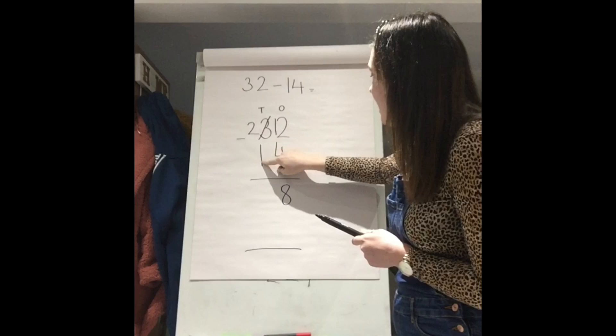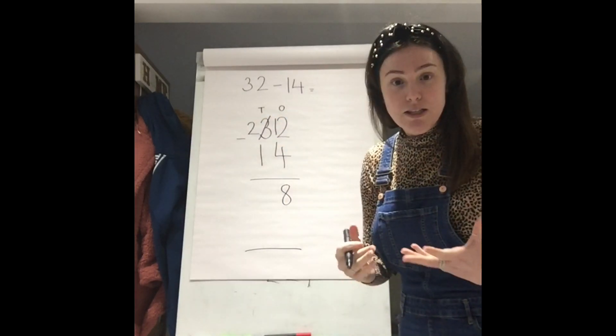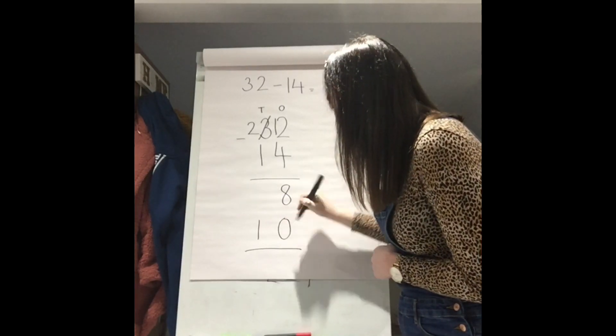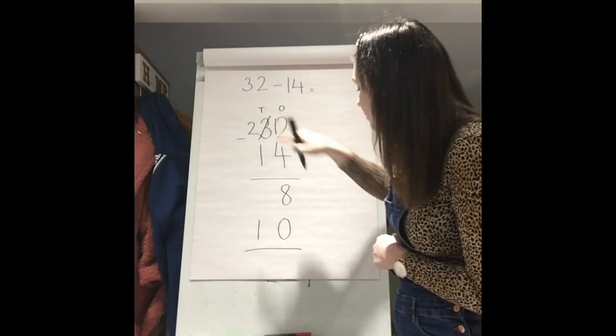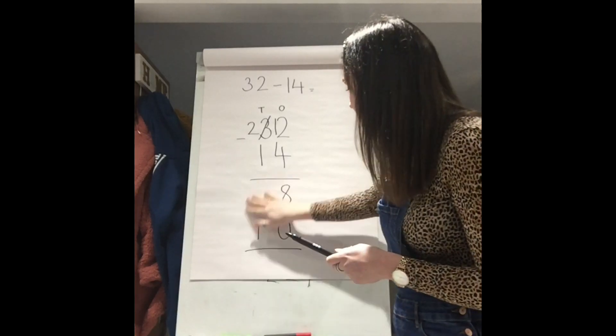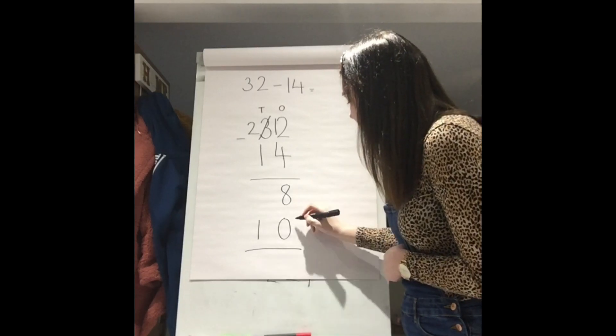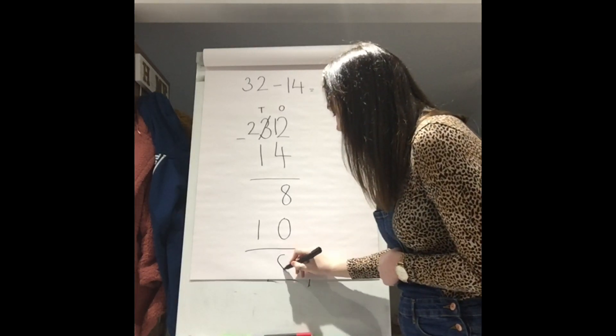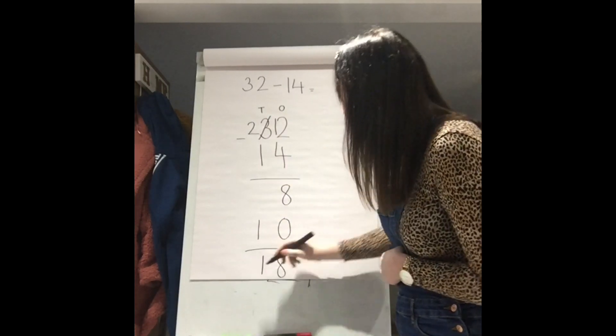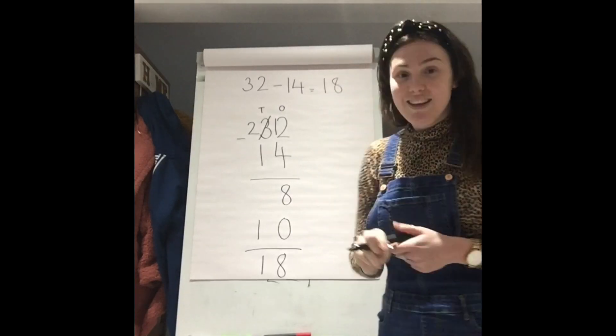Now, instead of having 30 take away 10, because we've exchanged, we've now got 20 take away 10. And 20 take away 10 is 10. And I'll make sure I've got it lined up properly so that my digits are in the right column. And now the same as yesterday, even though it's a subtraction, we still need to add our total of our 1s column and our 10s column together. So, 8 and 0 is 8. And this is our 10 here because it's in the 10s column. So, we know that 32 take away 14 is 18.